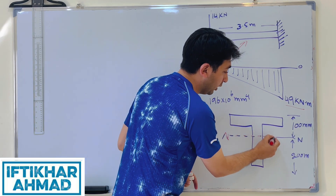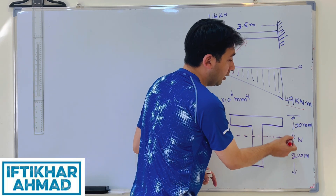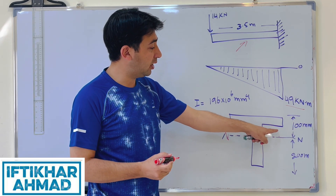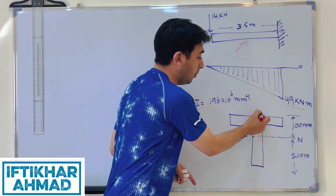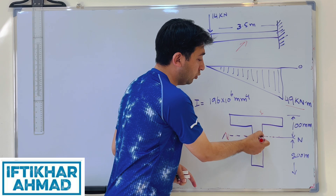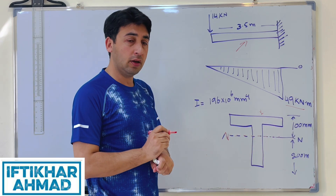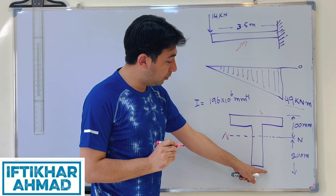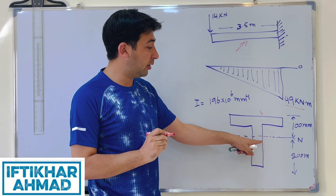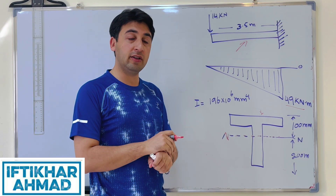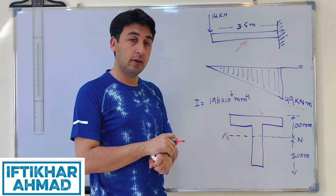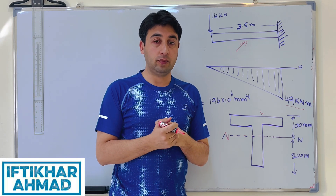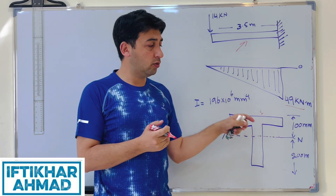The cross section of the beam is a T-section. The neutral axis is shown, and the distance from the top extreme fiber to the neutral axis is 100 millimeters. The distance from the bottom extreme fiber to the neutral axis is 200 millimeters.